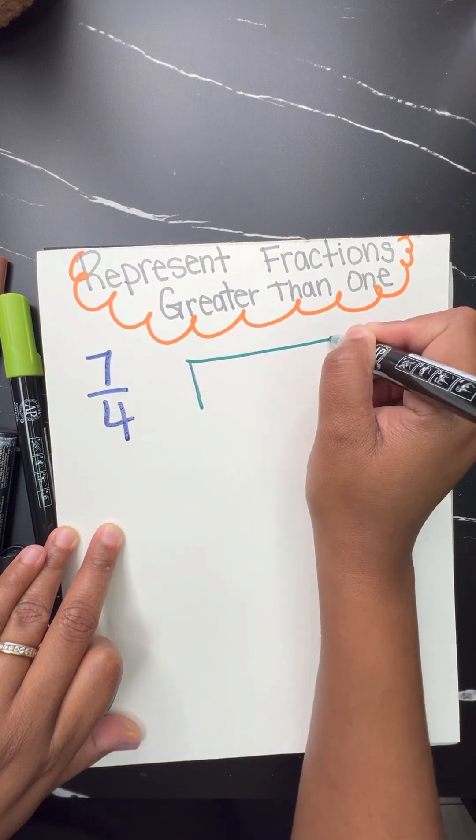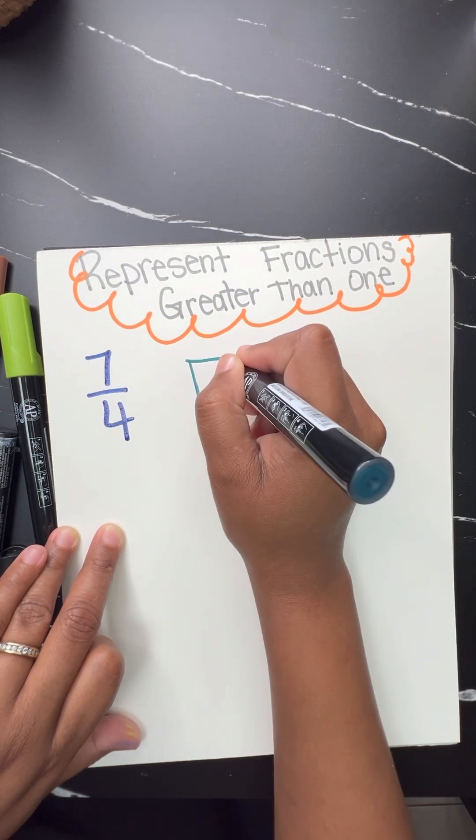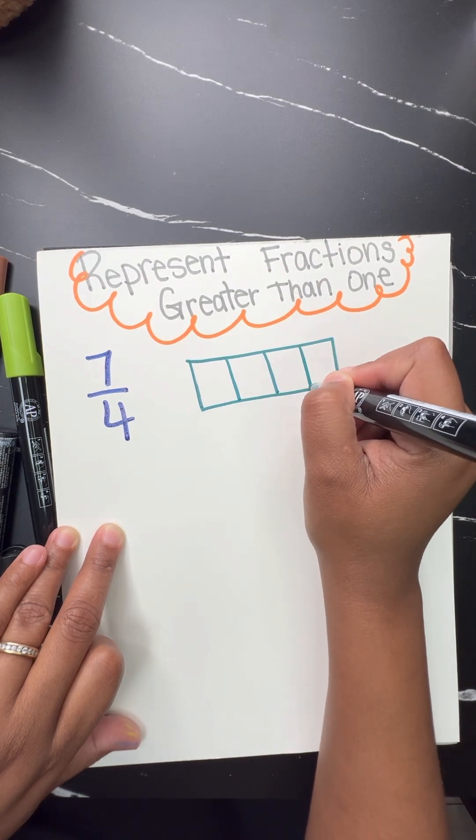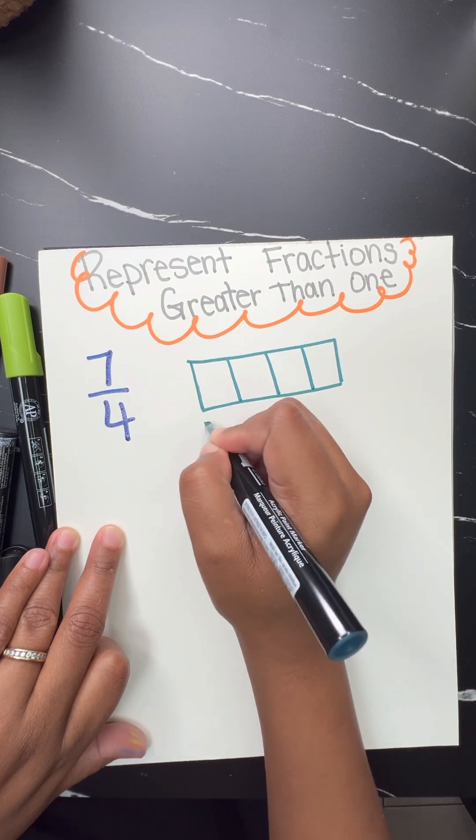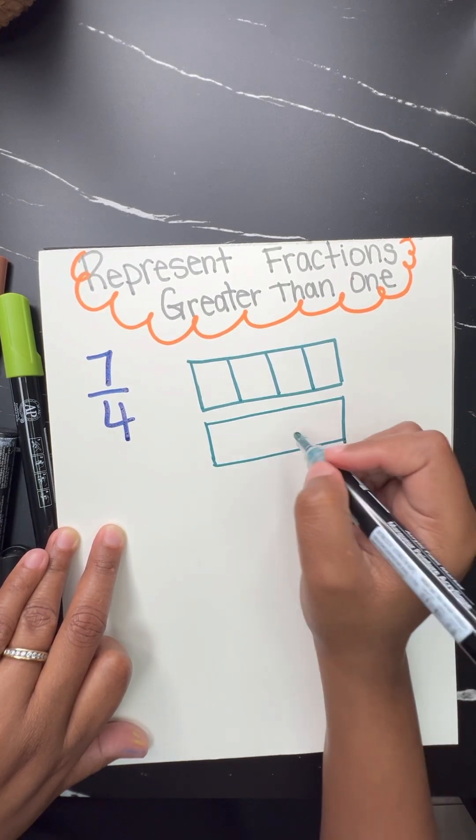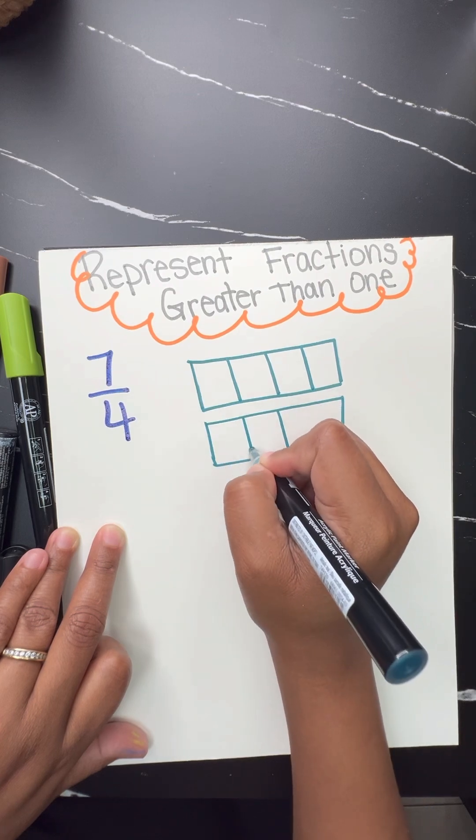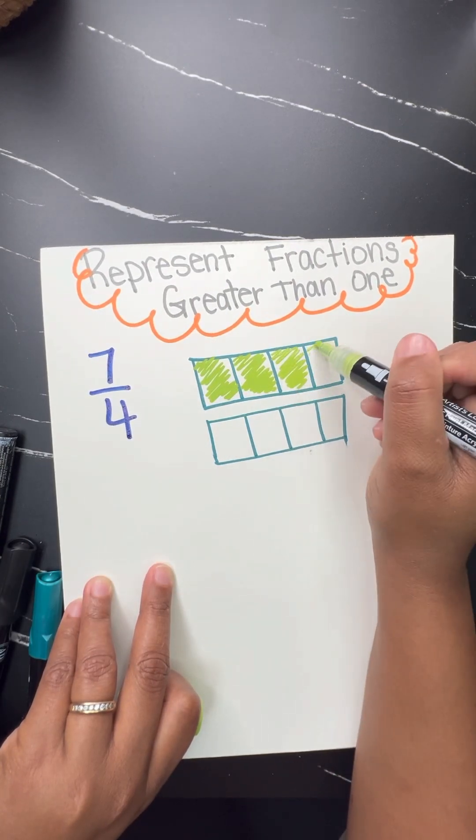We notice that the denominator is four, so we're going to divide our model into four equal pieces. But our numerator is seven, which is greater than the denominator, so we have to draw another model to represent seven.